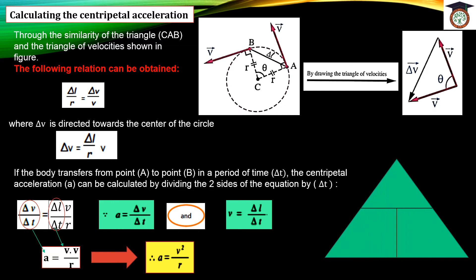If we put this relation in a magic triangle, we get: centripetal acceleration a equals the square of tangential velocity V² divided by the radius R. From the triangle, the radius equals V² divided by acceleration, and the square of tangential velocity V² equals acceleration times radius.